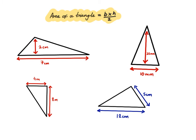Now that we know that the area of a triangle is equal to base times height divided by 2, let's do some examples. So let's start off with this one over here. The base of this triangle is 7 centimetres.